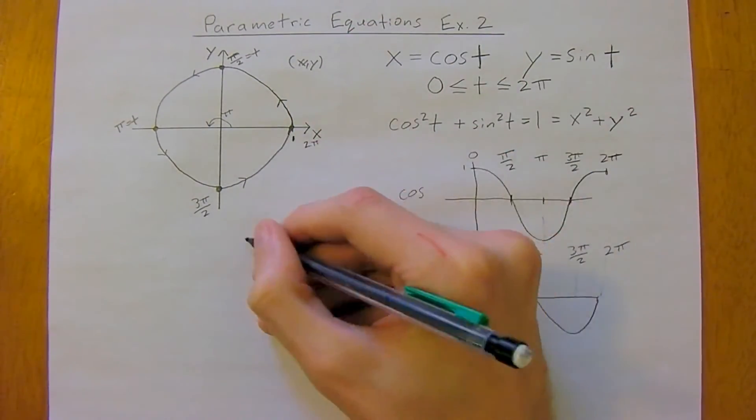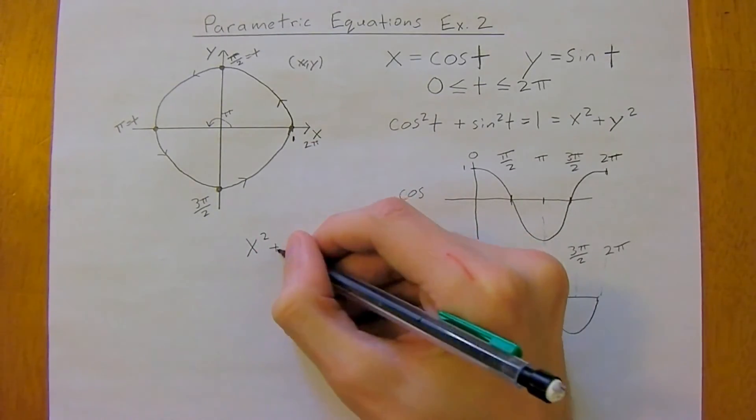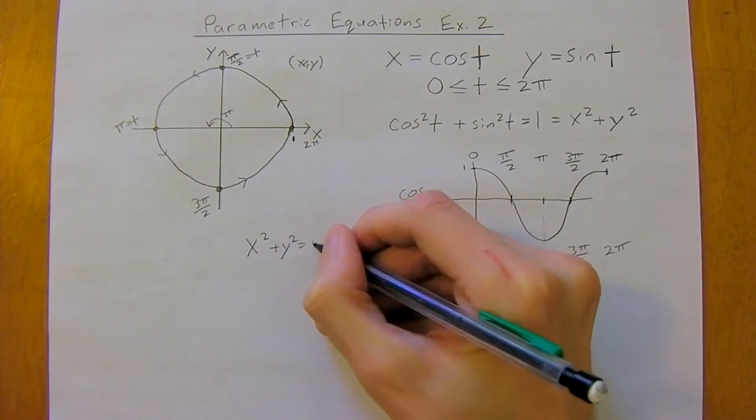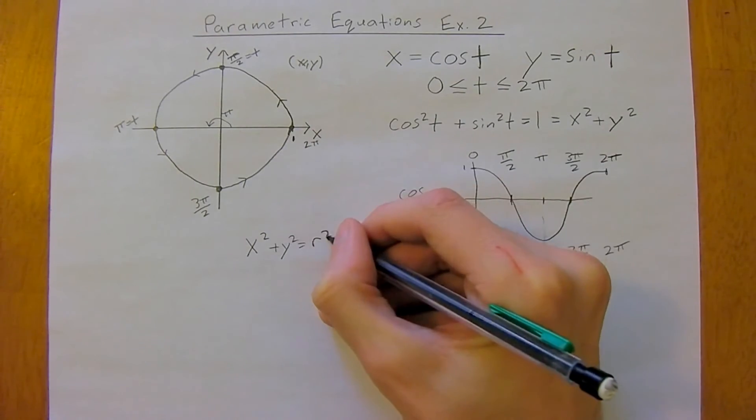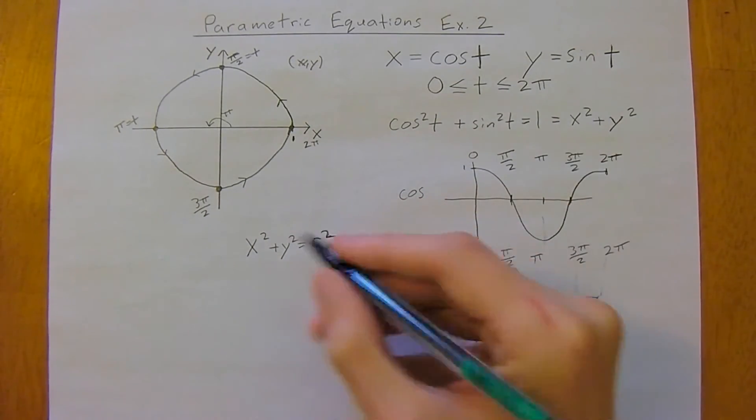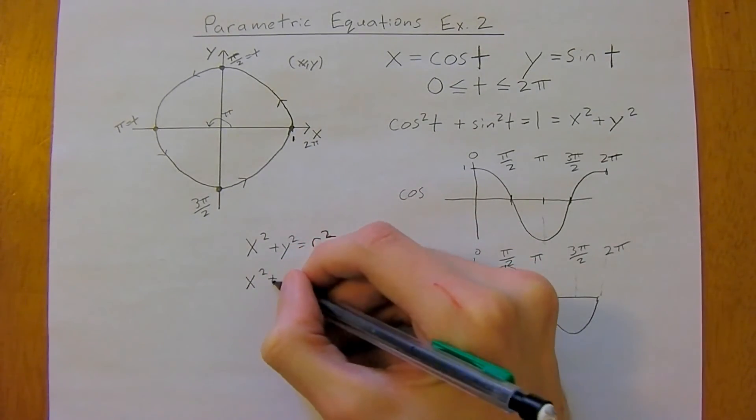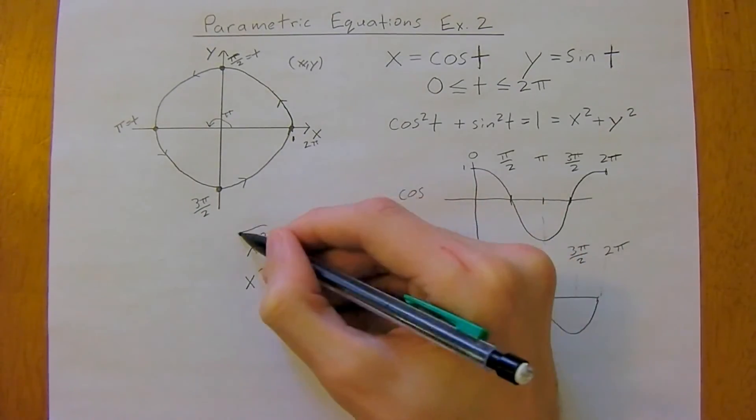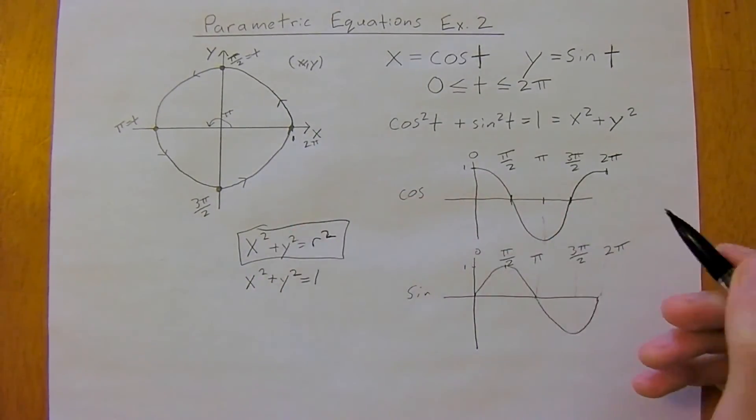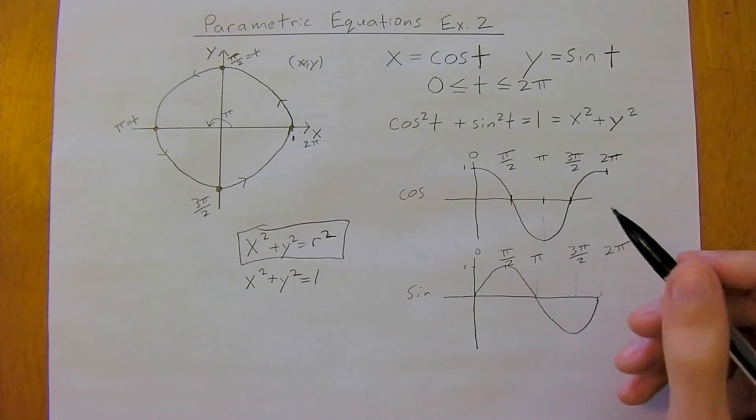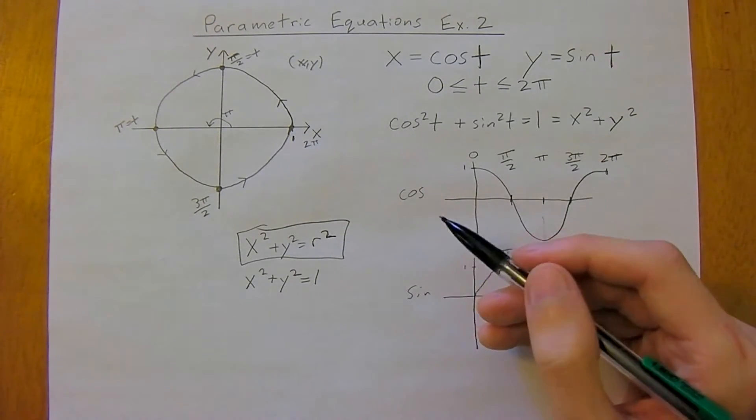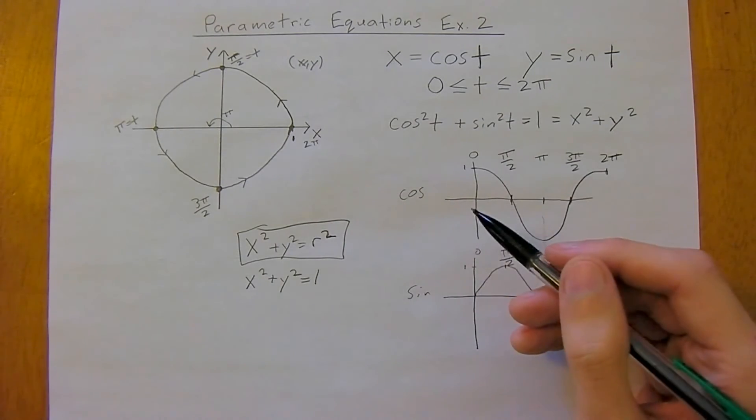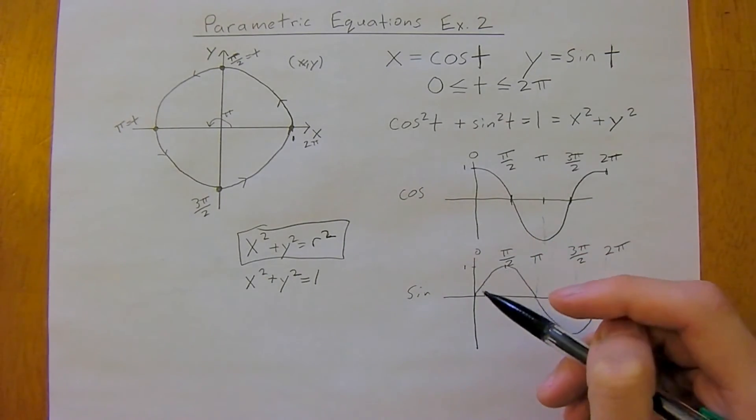And the unit circle is x squared plus y squared equals r squared. So in this case, radius is 1, so x squared plus y squared equals 1, and that's just your simple equation for a circle. And then, notice in this case, the parameter t can be interpreted as the angle in radians.